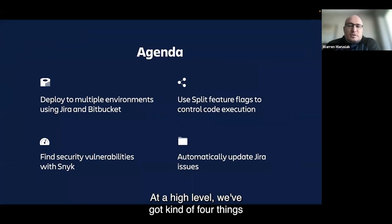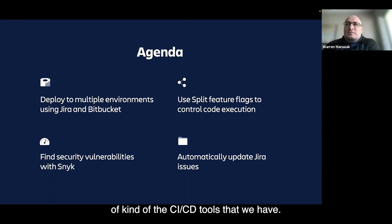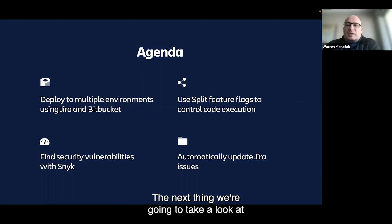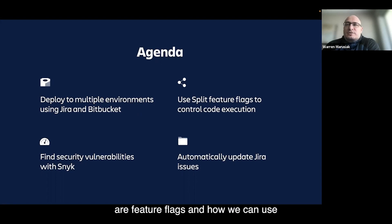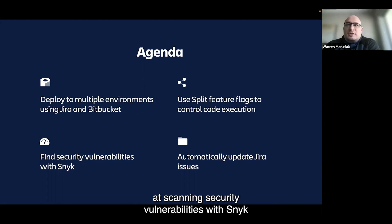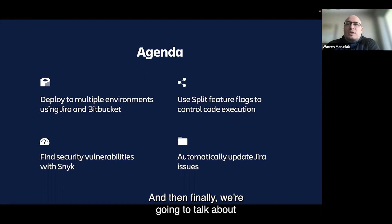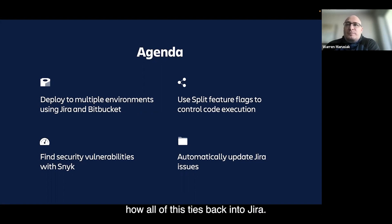At a high level, we've got four things we want to cover. First, we're going to talk about deploying to multiple environments using Jira and Bitbucket — a brief overview of our CI/CD tools. Next, we'll look at feature flags and how we can use those to control code execution. Then we'll look at scanning security vulnerabilities with Snyk, which integrates directly with Bitbucket. And finally, we'll talk about how all of this ties back into Jira.